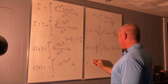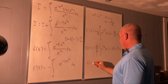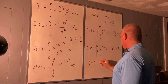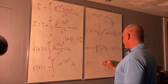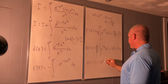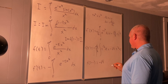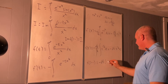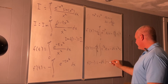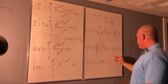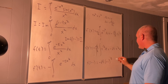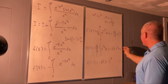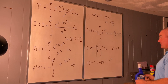Our function evaluated at (1 minus i) is going to be equal to negative square root of pi times (1 minus i) to the one half — but we have to take care of that plus C first.